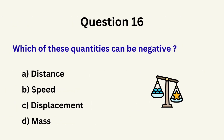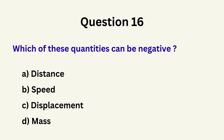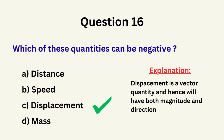Question 16: Which of these quantities can be negative? A. Distance, B. Speed, C. Displacement, D. Mass. The correct answer is C: displacement.